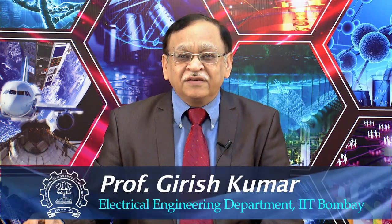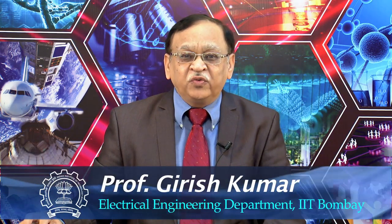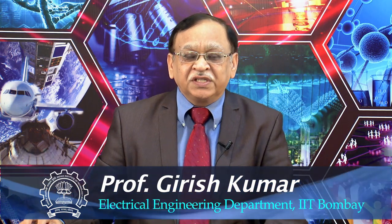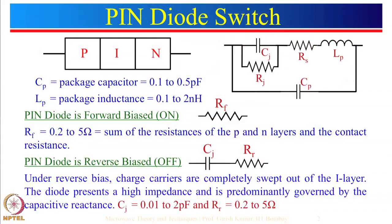Hello everyone. In the last lecture we had talked about RF switches, and our main discussion was on single pole single throw switches realized using PIN diodes. We looked at the circuit configuration of the PIN diode and saw that when forward biased it is represented by a series resistance and series inductance. When reverse biased it was modeled as Cj in series with RR resistance.